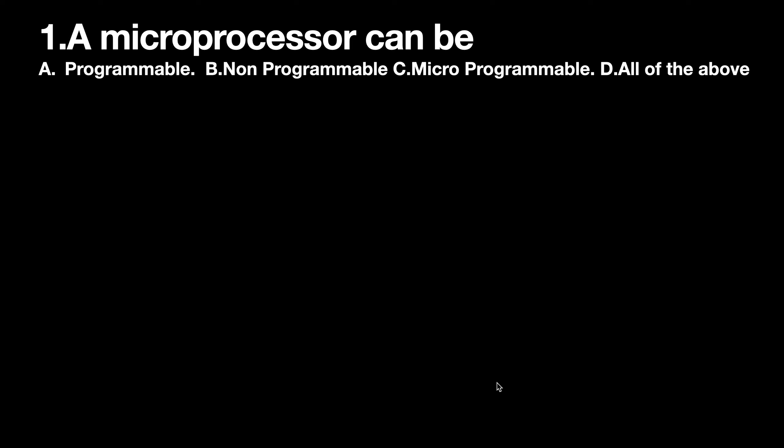First question: a microprocessor can be - A) programmable, B) non-programmable, C) micro-programmable, D) all the above. What is the answer? This is a previous question asked in Kerala PSC 2020 Higher Secondary Teacher exam. The correct answer is option D - all the above.